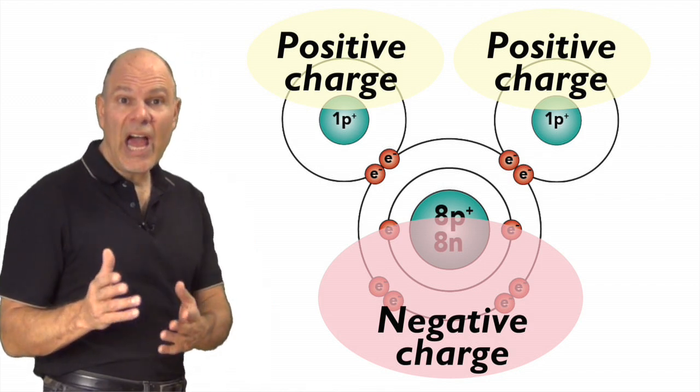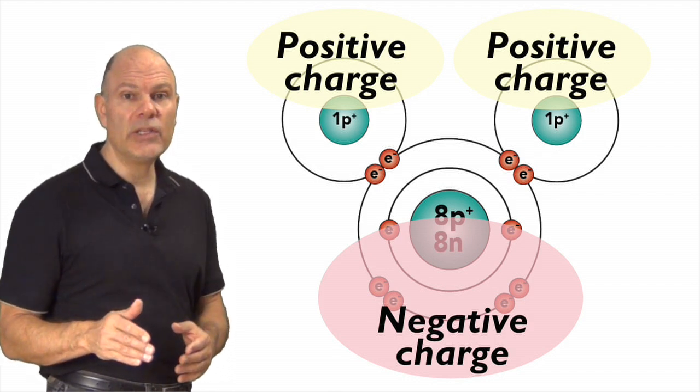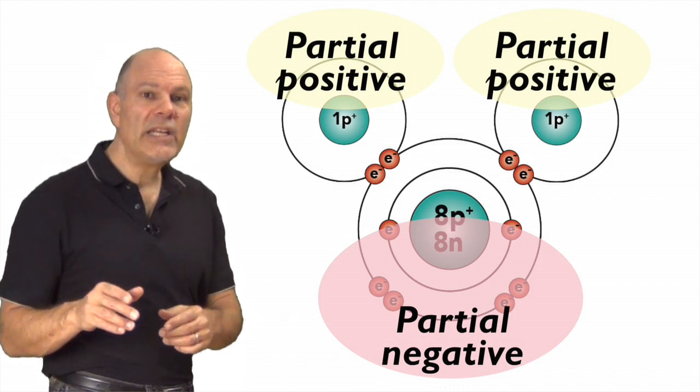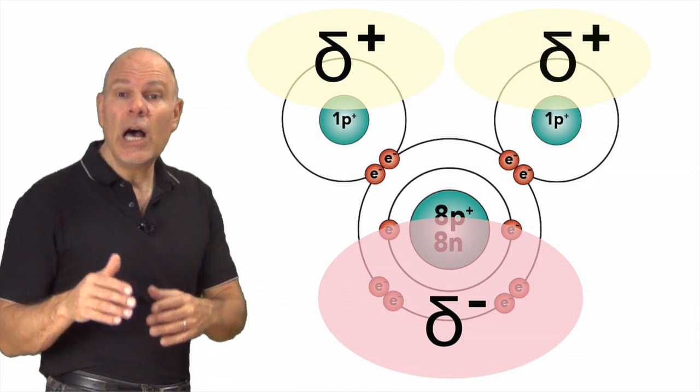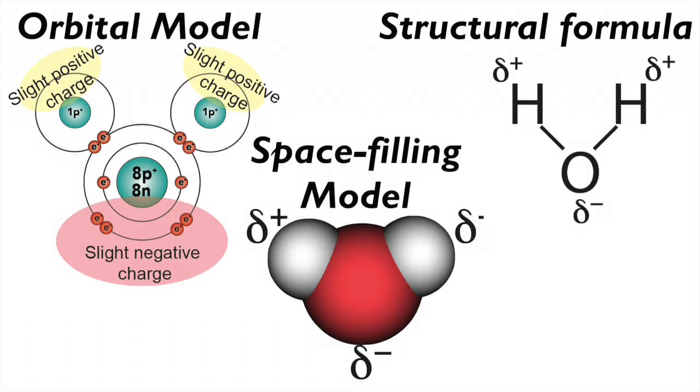These charges on the hydrogen and oxygen side of the water molecule aren't as strong as the charges on ions. So we refer to them as partial charges. They're represented with a plus or minus sign, accompanied by the Greek letter delta. Take a moment and study these diagrams of water, each one showing these partial charges.